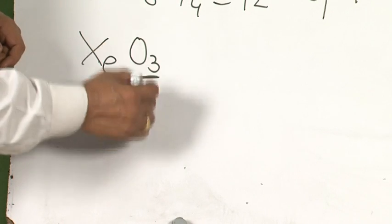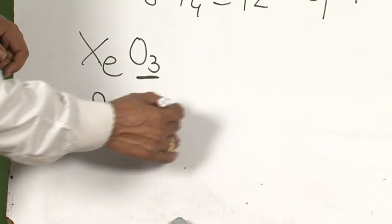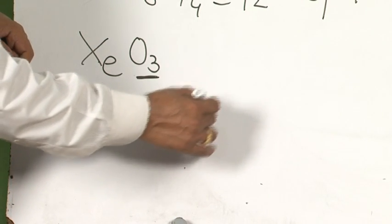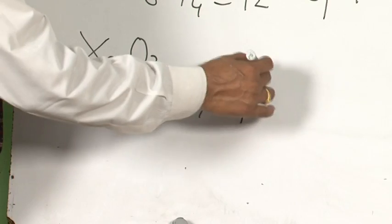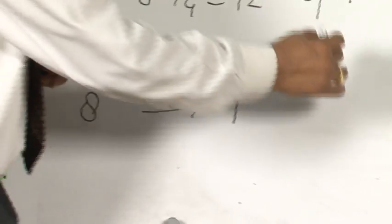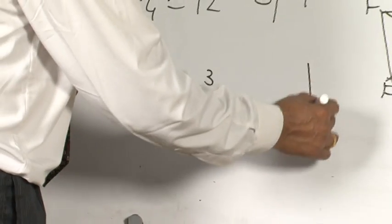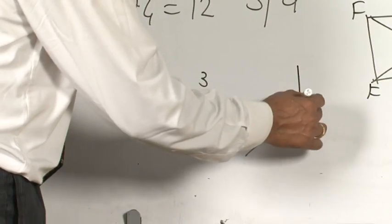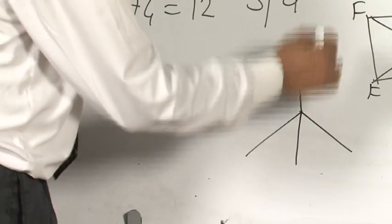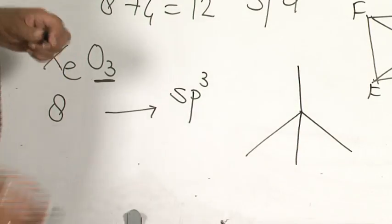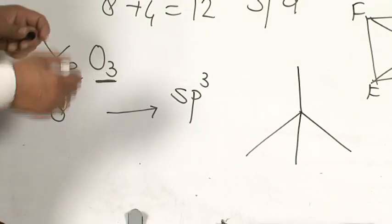Only 8. So for 8, this is sp3 hybridization, and for sp3 hybridization, the regular geometry and shape is tetrahedral.